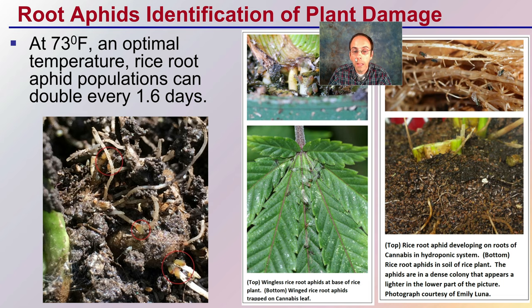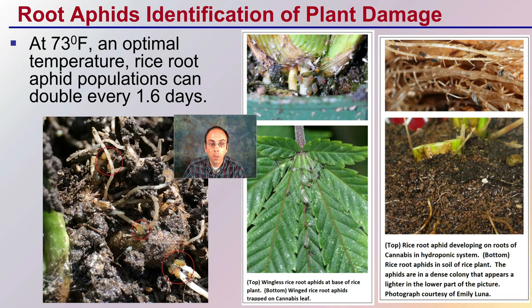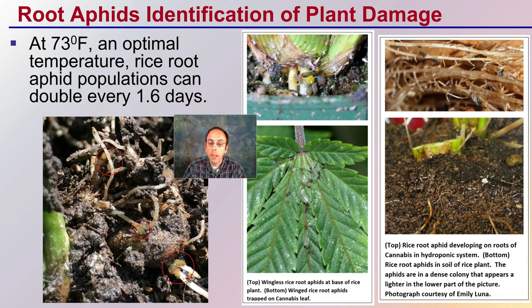Root aphid identification and plant damage: at 73 degrees Fahrenheit — the optimum temperature — rice root aphid populations can double every 1.6 days, so they can spread very quickly. Here we can see what wingless root aphids look like at the base of a plant, and here we see winged rice root aphids trapped on a cannabis leaf.